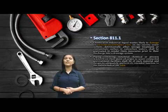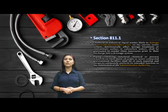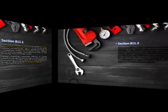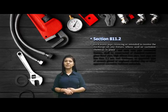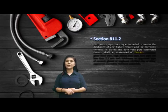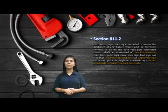Piping conveying chemical or processed waste from their point of origin to sewer-connected pre-treatment facilities shall be of such material and design to adequately perform the intended function to the satisfaction of the Administrative Authority. Section 811.2: Each waste pipe receiving or intended to receive the discharge of any fixture where acid or corrosive chemicals are used, and each vent pipe connected thereto, shall be constructed of chemical-resistant glass-lined pipe, high-silicon iron pipe, steel pipe not less than 3.2 mm wall thickness, or an approved type of ceramic-glazed or unglazed petrified clay, or other approved corrosion-resistant materials.